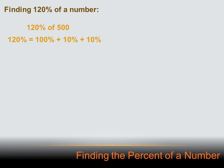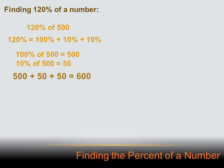Let's take this a little bit further. Let's say we wanted to find 120% of a number — 120% of 500. The first thing to remember is 120% equals 100% plus 10% plus 10%. 100% of 500 equals 500. 10% of 500 equals 50. So 120% of 500 equals 500 plus 50 plus 50, which equals 600.